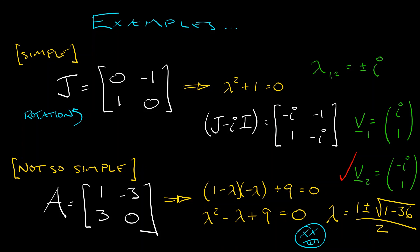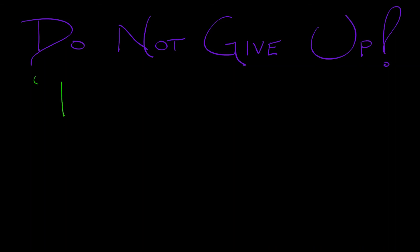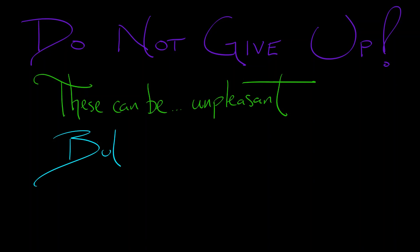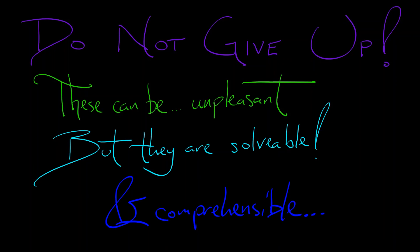Hopefully you won't have to deal with too many examples like this one, but if you do, don't give up. Some examples can be a little bit unpleasant, but they are solvable and comprehensible. What we're going to push towards in the future is really understanding what's going on when you have complex eigenvalues, repeated eigenvalues, or any kind of eigenvalues — because next, we're going to work on how we use this to solve linear dynamical systems.